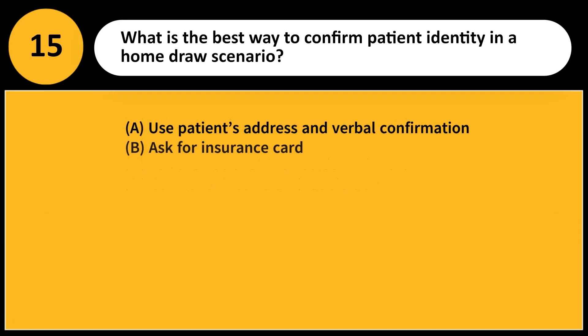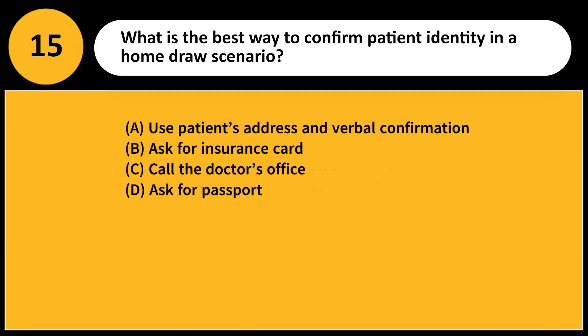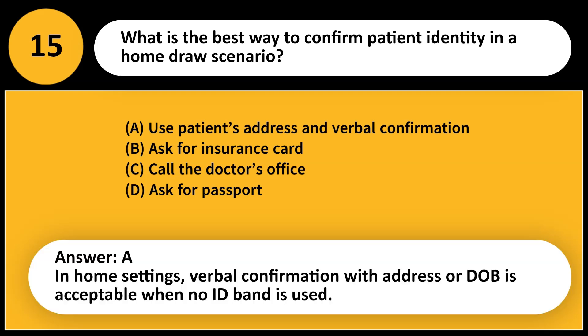What is the best way to confirm patient identity in a home draw scenario? A. Use patient's address and verbal confirmation. B. Ask for insurance card. C. Call the doctor's office. D. Ask for passport. Answer: A. In home settings, verbal confirmation with address or DOB is acceptable when no ID band is used.